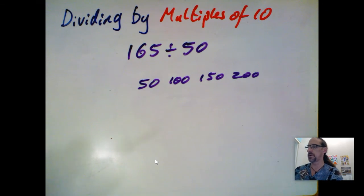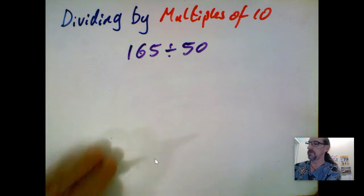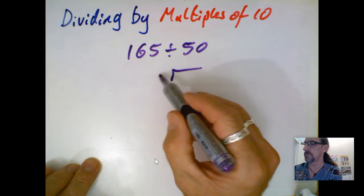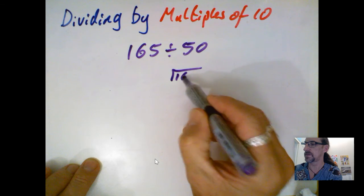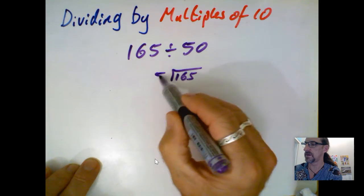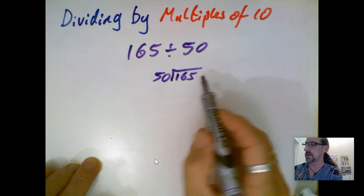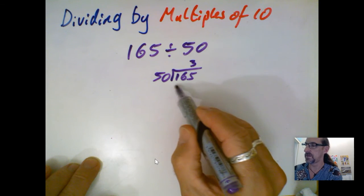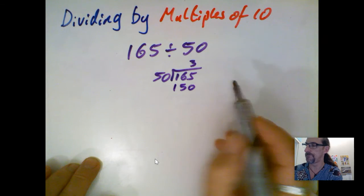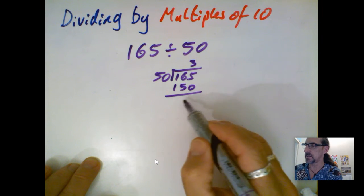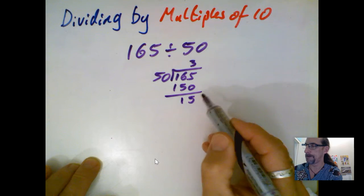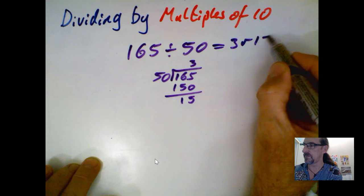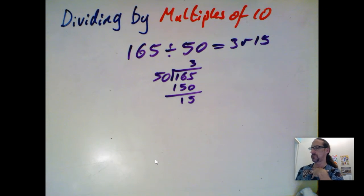So if I use my standard algorithm now, I've got my whole number, 165, and my divisor, which is 50, and I know that three lots of 50 is 150. I subtract that, and I end up with 15. So this is three with a remainder of 15.